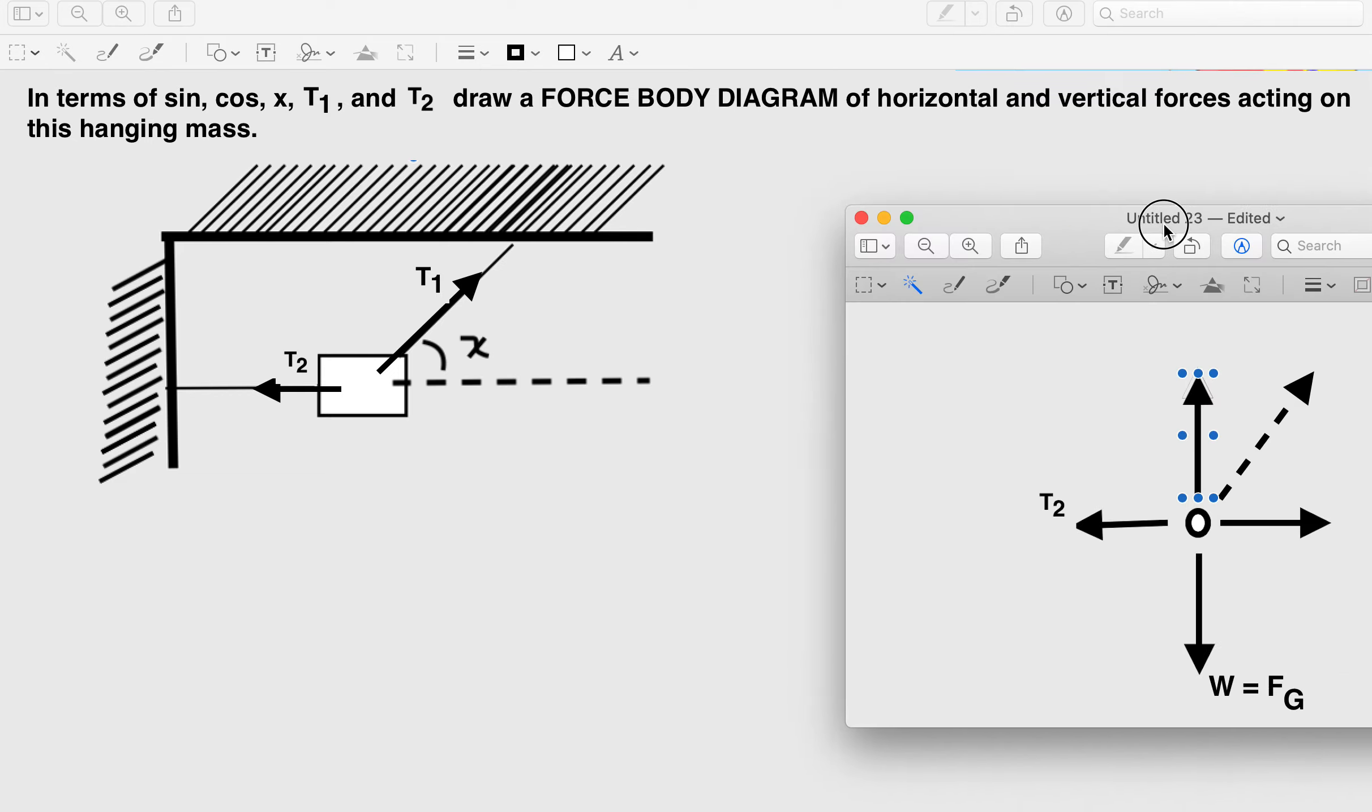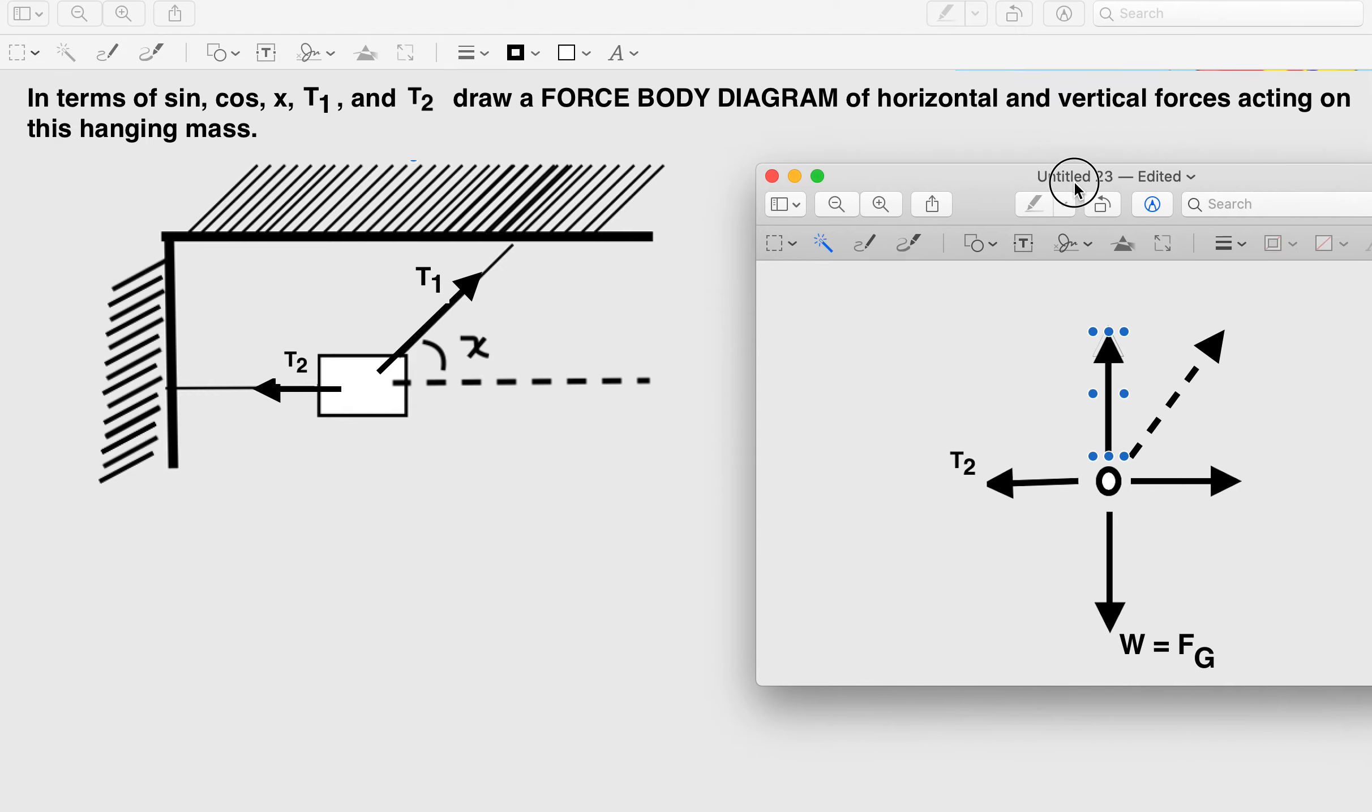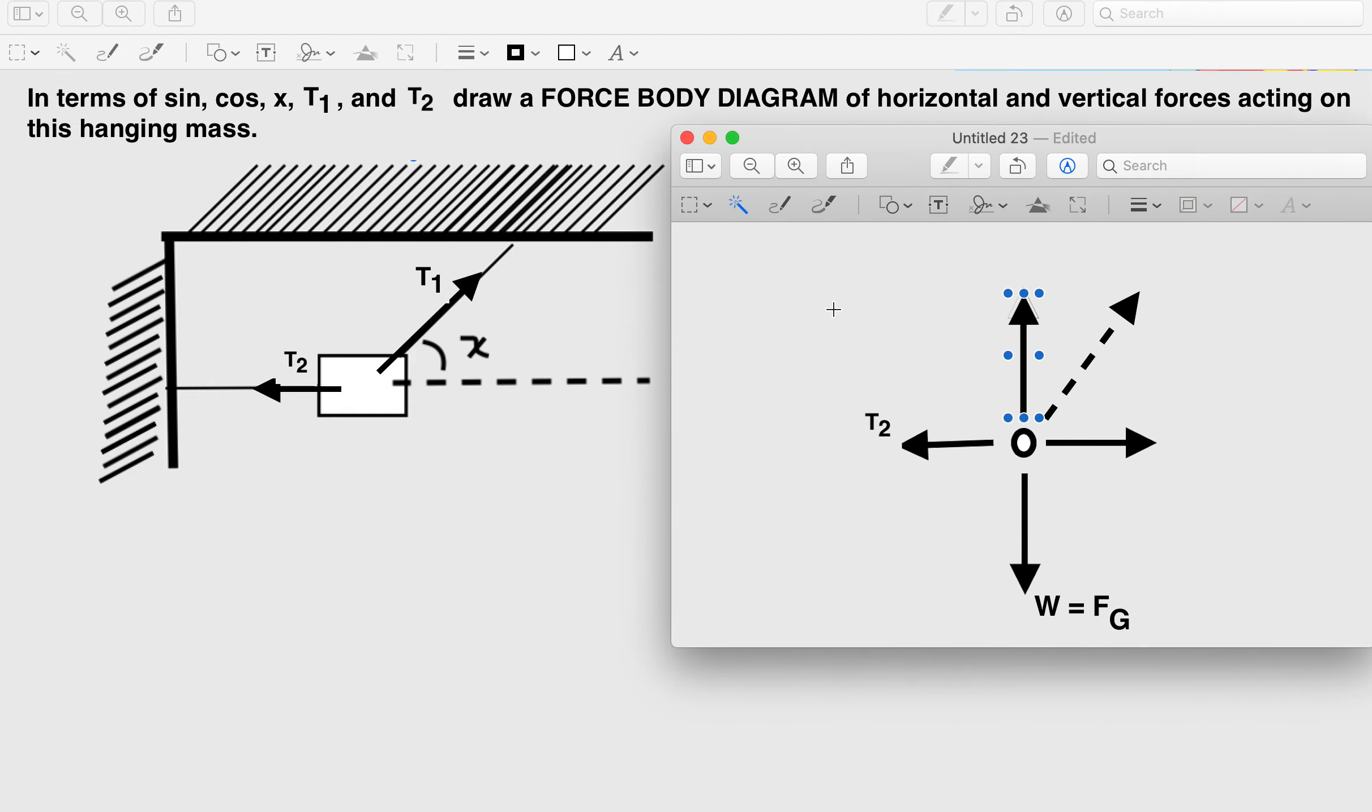Here is the first picture. So this horizontal force we know to the left must be this tension 2. There's no other force pulling to the left in this picture. If you think there's another force pulling to the left, you have to tell me what it is.